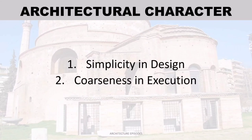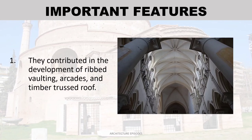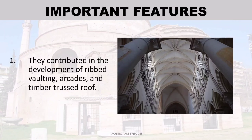Architectural character: Number one, simplicity in design. Number two, coarseness in execution. Important features: They contributed to the development of clerestoried arcades and timber trussed roofs.